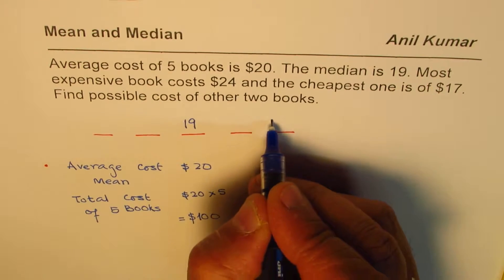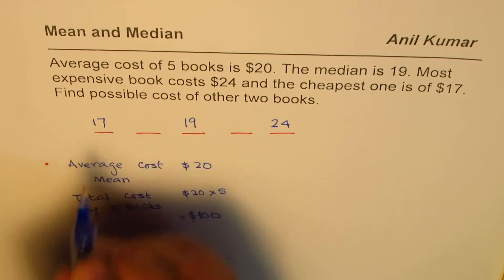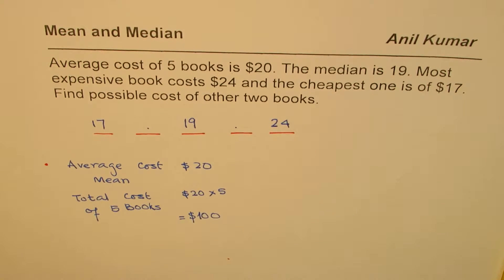Most expensive book cost $24. That is the most expensive. Let us arrange them in increasing order. Cheapest is $17. Find the possible cost of other two. That is the question for you. I hope you understand and appreciate the question now. You can always pause the video, answer and then look into my suggestions.